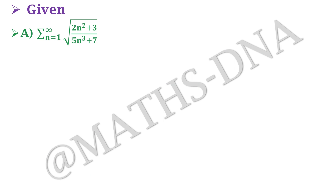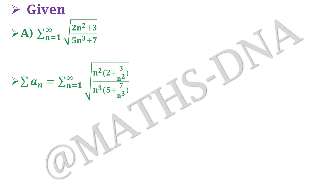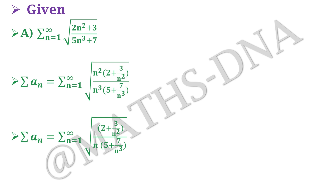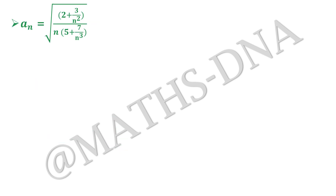Let us begin with option (a): summation n from 1 to infinity of √(2n²+3)/(5n³+7). Firstly, we simplify. We take n² from the numerator as common and n³ from the denominator as common, giving summation of √(n²(2+3/n²)) / (n³(5+7/n³)), which simplifies to √(2+3/n²) / (n·(5+7/n³)).